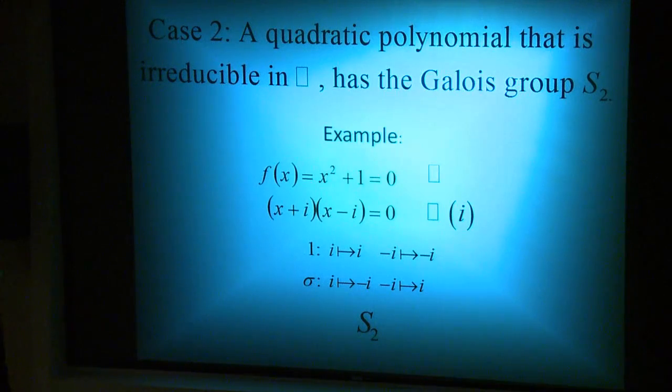Since the splitting field is ℚ(i), there are two ℚ-automorphisms defined by the identity, which is 1. It will take i to i and negative i to negative i. For that reason, the Galois group is S2.